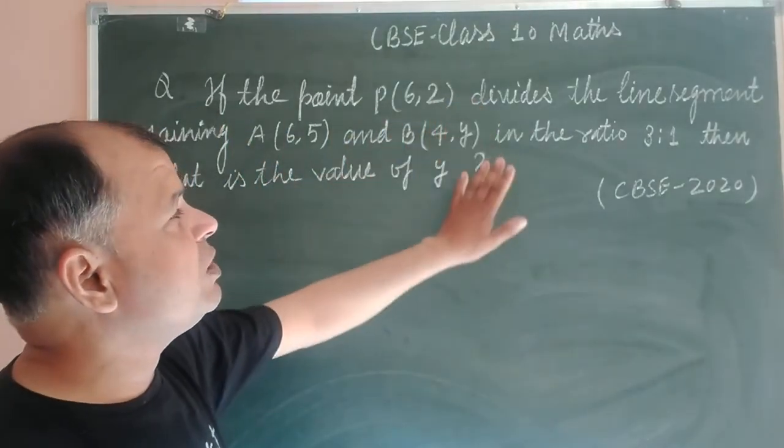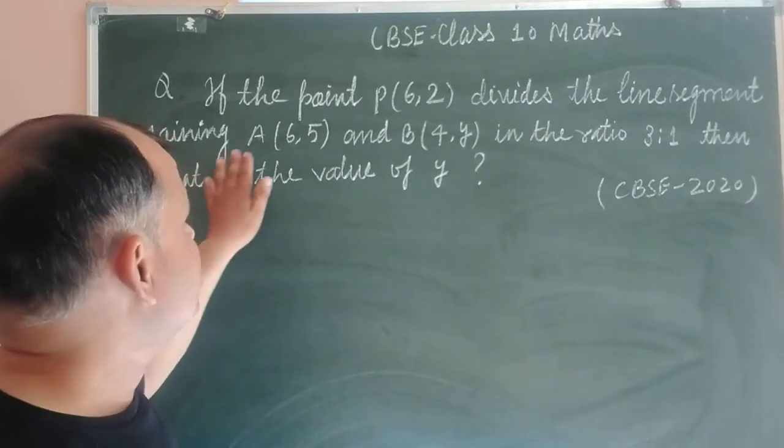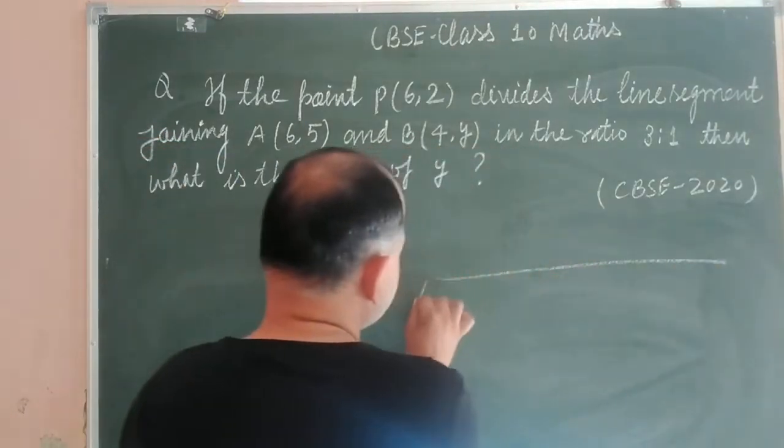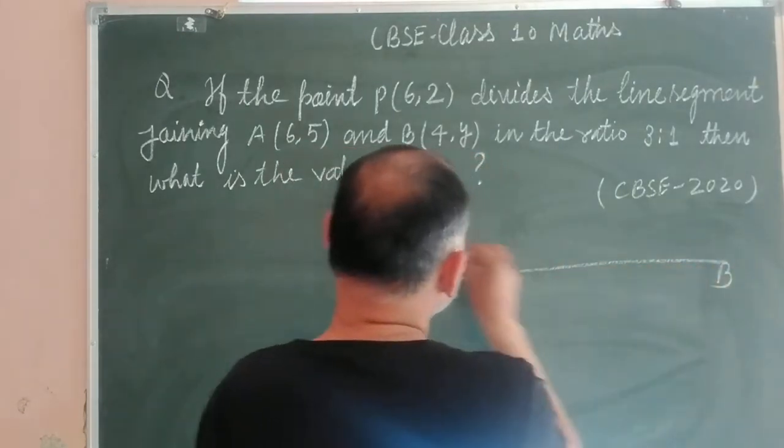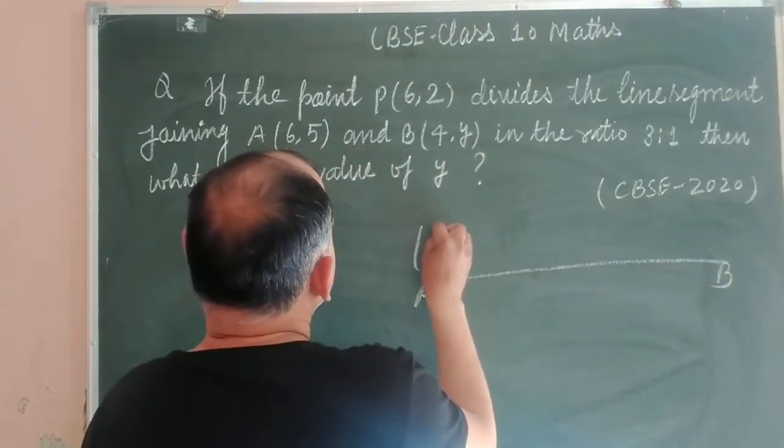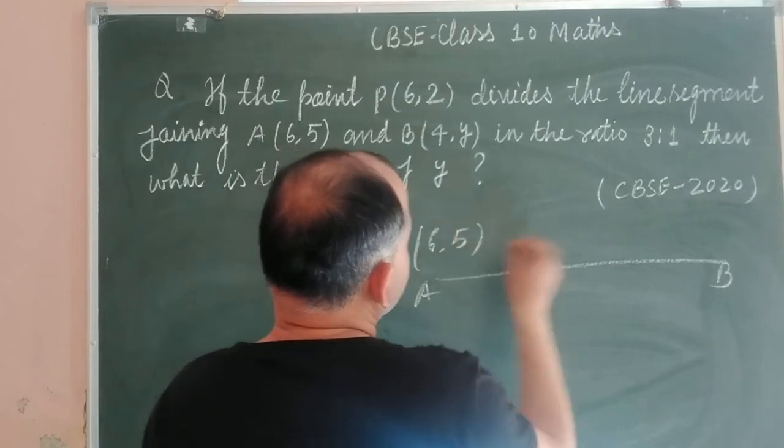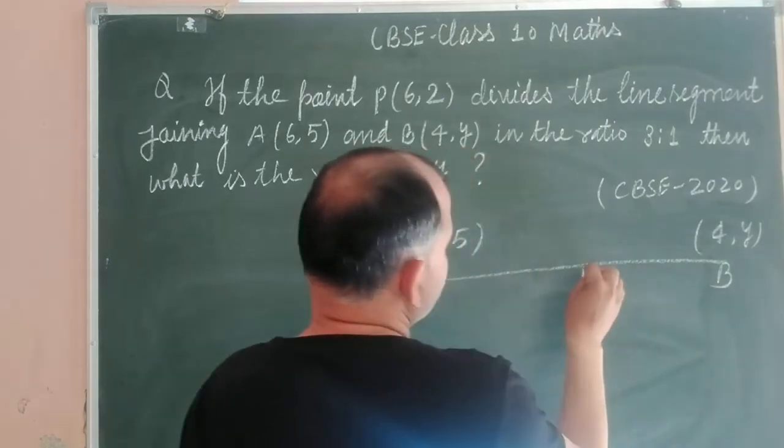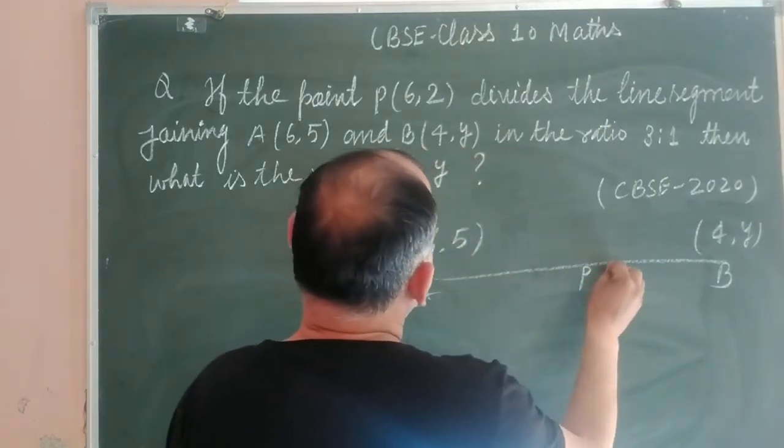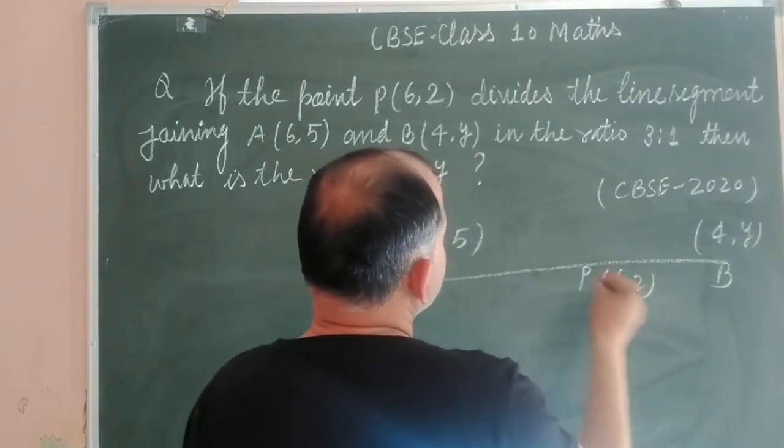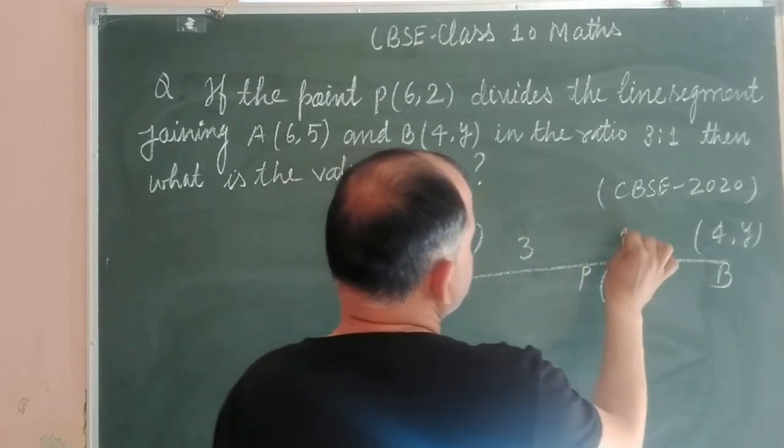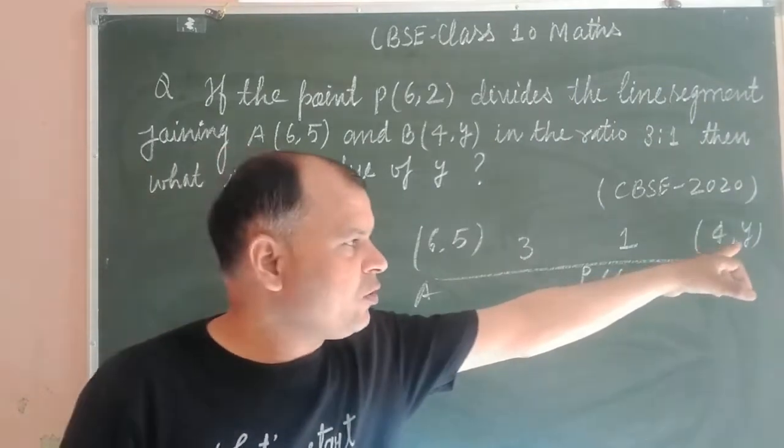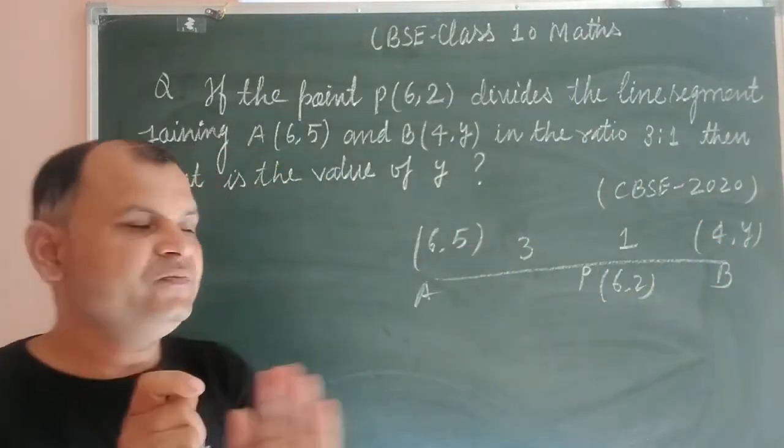If the point P(6,2) divides the line segment joining A(6,5) and B(4,Y), where A has coordinates (6,5) and B has coordinates (4,Y), and point P with coordinates (6,2) divides this line segment in the ratio 3:1, then we need to find the unknown Y coordinate of point B.